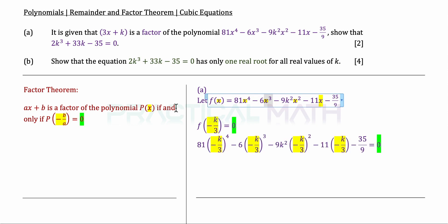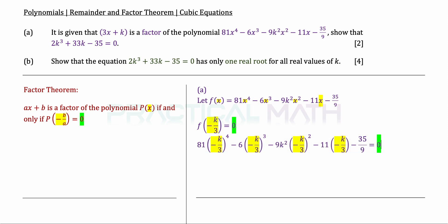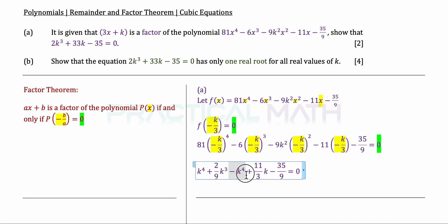We place all x values as negative k over 3 into the original polynomial, so we have our terms replacing every single x with negative k over 3, as seen in the highlighted terms. The remainder will therefore equal 0. We now have a string of terms consisting of k's and constants.